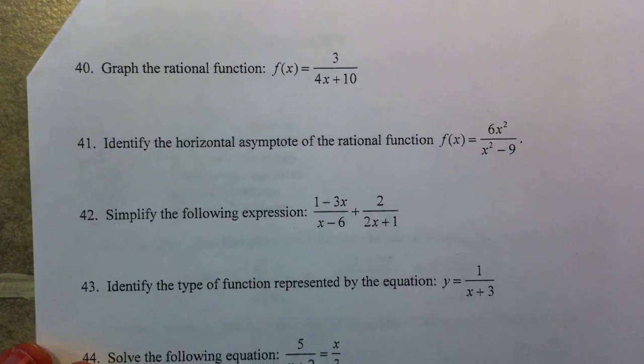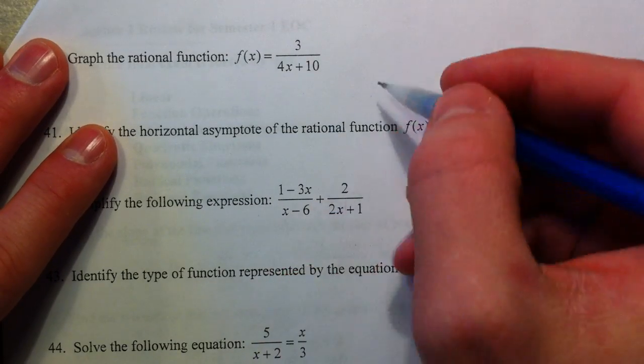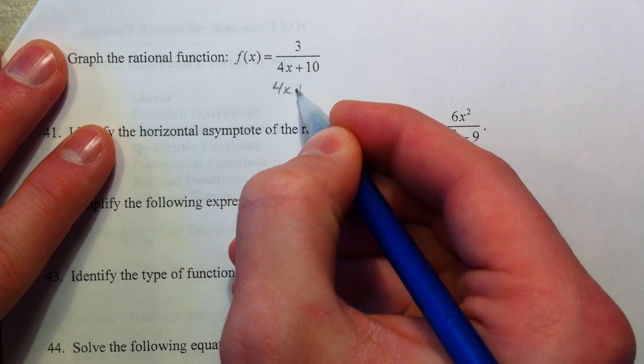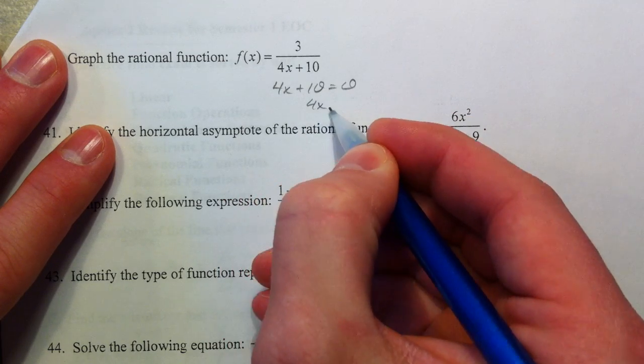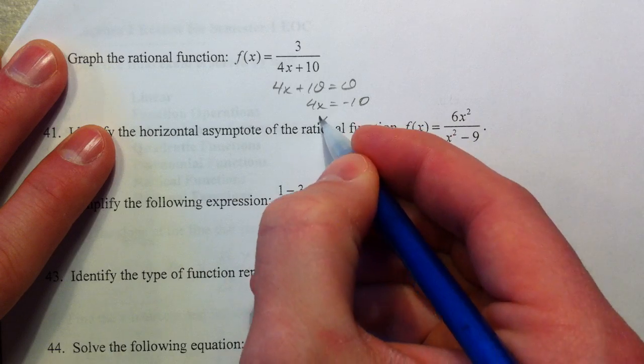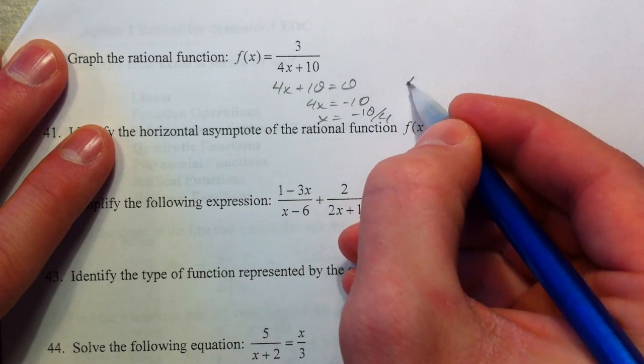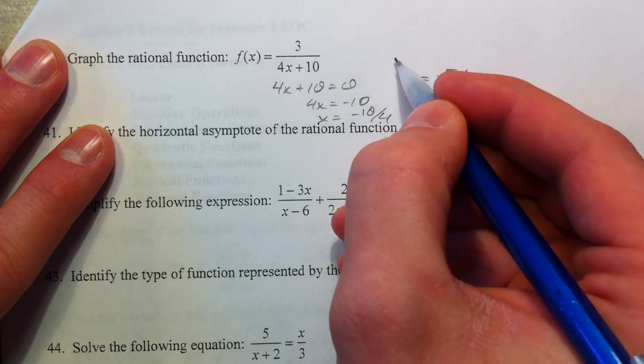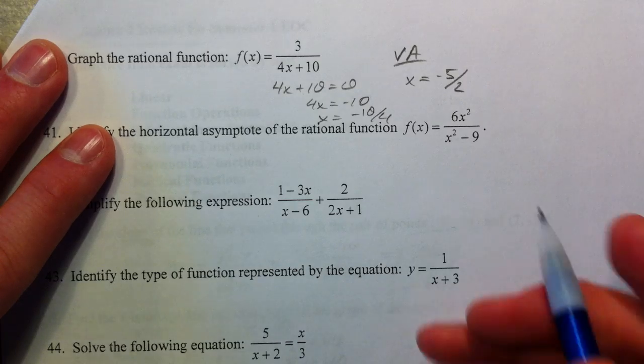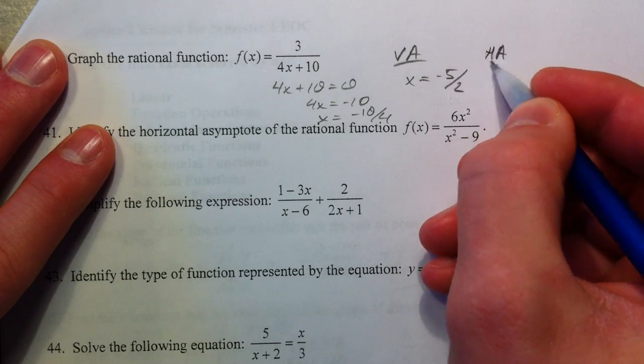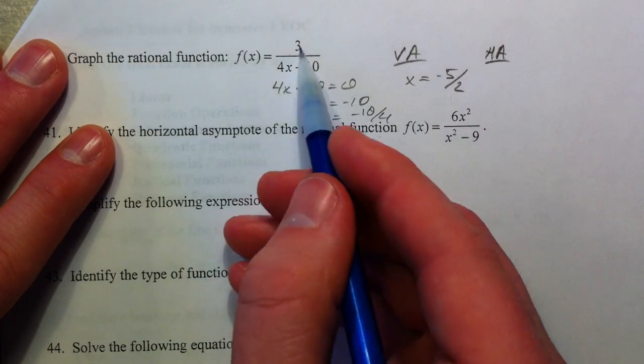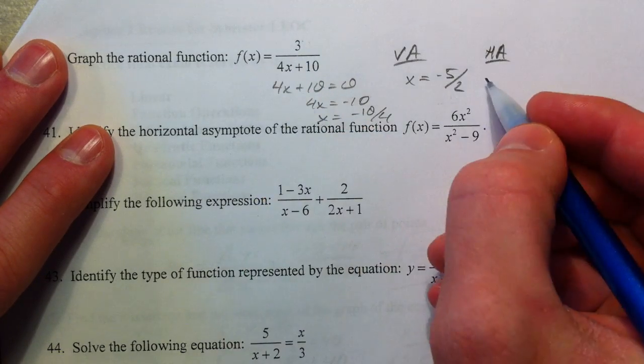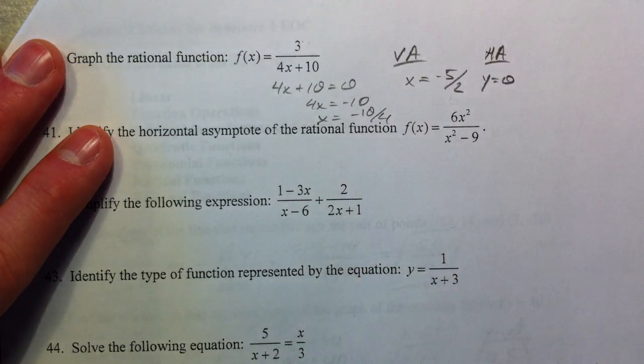To graph this rational function, how you're going to help yourself out is just like on the last problem. 4X plus 10 equals 0. And so 4X equals negative 10, X equals negative 10 over 4, or X equals negative 5 halves is your vertical asymptote. Your horizontal asymptote has everything to do with the degree. And because the numbers get bigger on the bottom faster, P is less than Q. Y equals 0 is your horizontal asymptote.